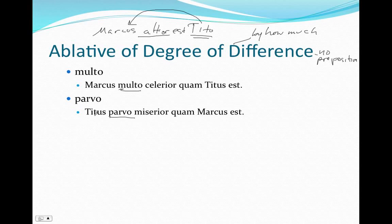Some other ones that are found: we have Marcus altior est Tito, but Marcus altior capite Tito est, quam Titus. Here's our ablative of comparison, but our ablative of degree of difference is capite - Marcus is taller by a head. He is a head taller than Titus. The capite tells us how much taller he is.